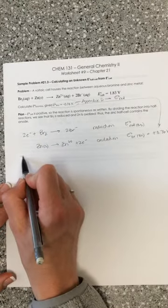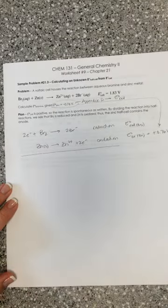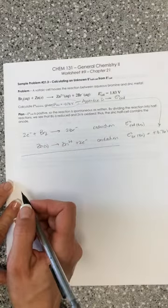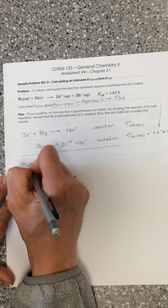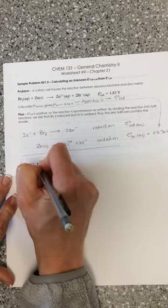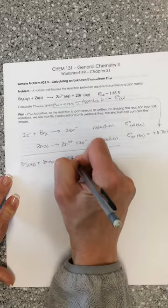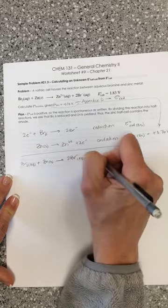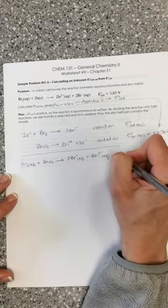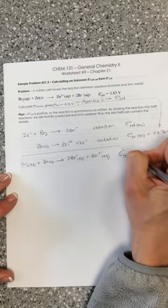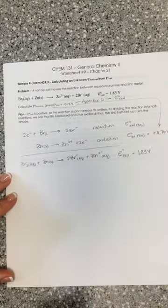Sum these up and you're going to get our overall reaction. We don't need to do any scaling. This was already a balanced redox reaction. So we've got bromine plus zinc goes to 2 bromide plus zinc. And we know E cell for this because they give it to us: 1.83 volts.